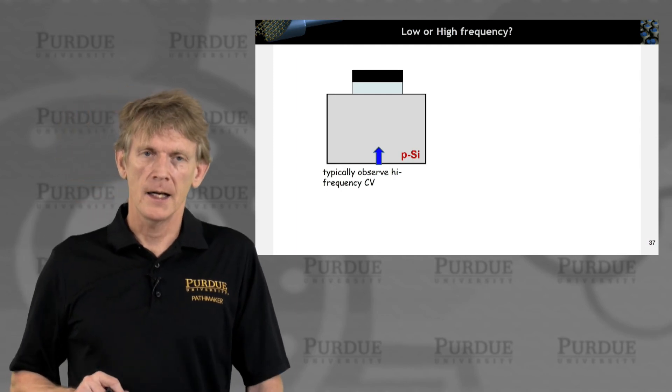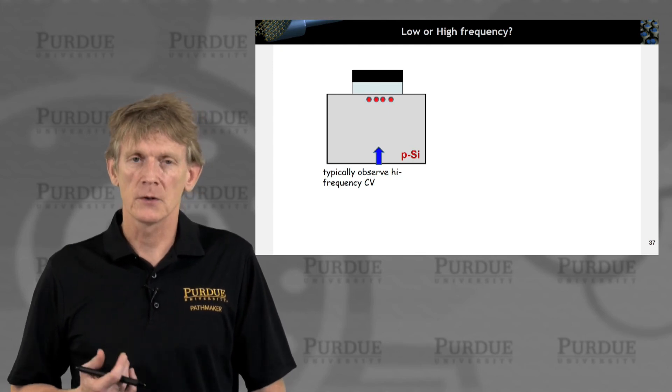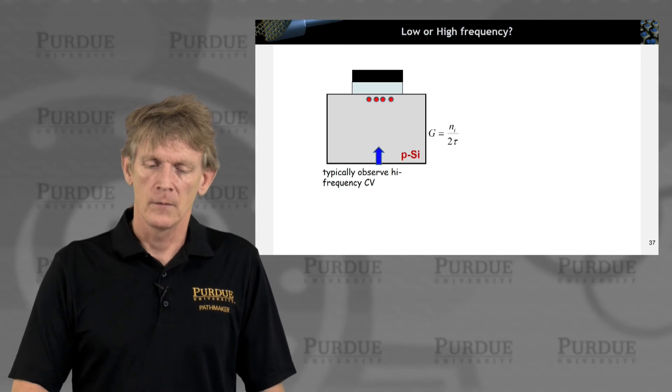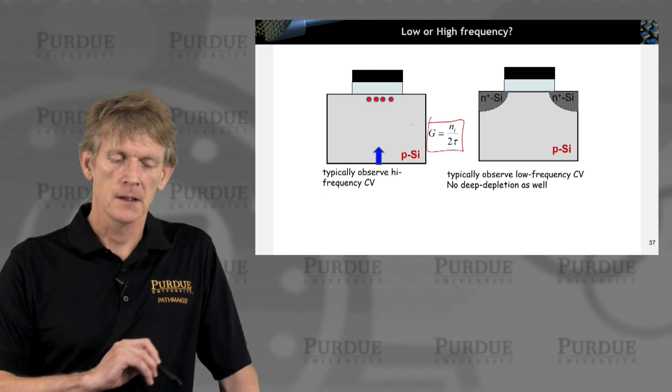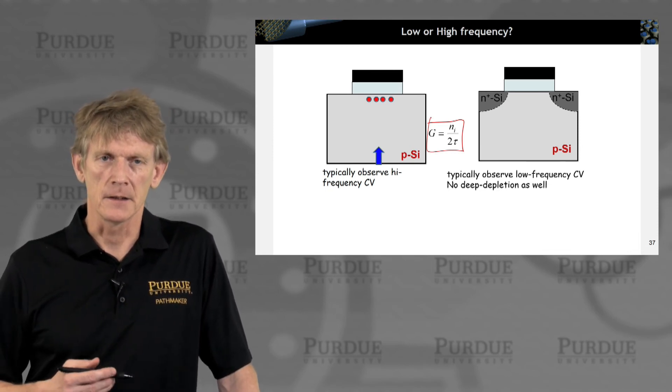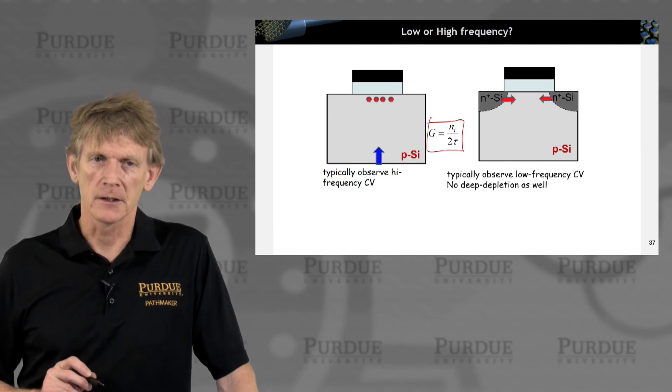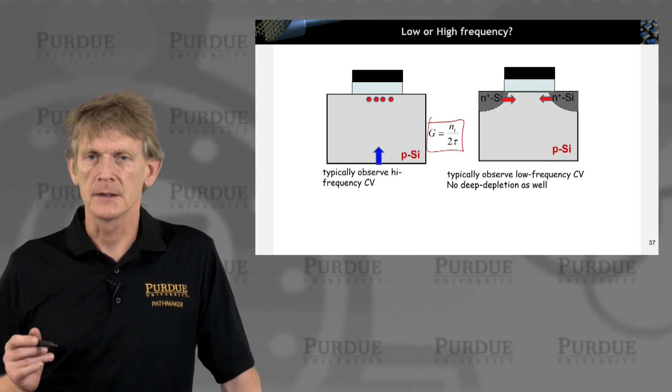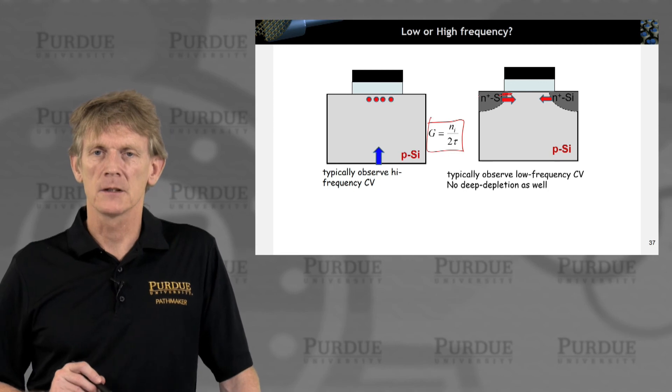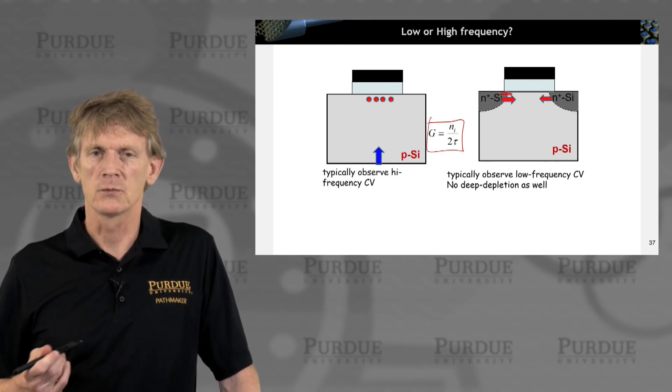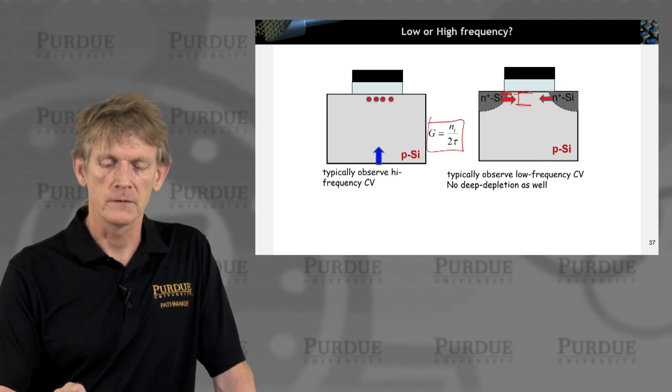Now, if you have a true MOS capacitor where you don't have source and drain gates close by, then you typically observe the high-frequency capacitance. But if you have a source and drain close by, and again, here's the generation rate, and that is typically slower than any typical measurement frequency, so you observe the high-frequency piece. But if you have a way to inject carriers from a source and a drain that is more rapid due to the existence of a channel and really turn those into majority carriers, if you will, since they are injected here, then you can measure the low-frequency capacitance as well. And you basically uncover the details of charges that are sitting very close and not depletion region-driven like here.